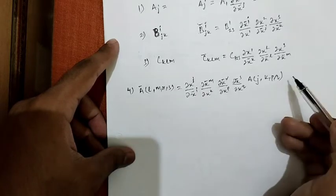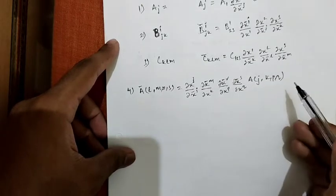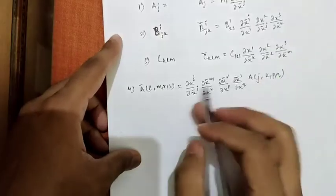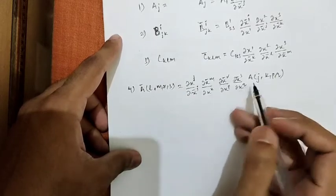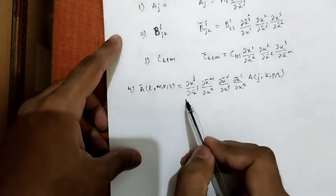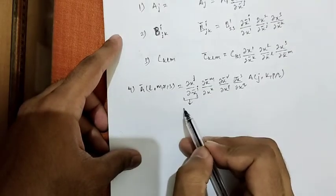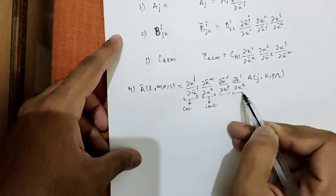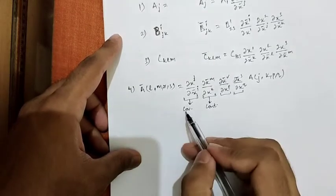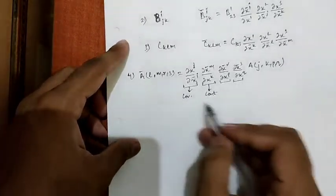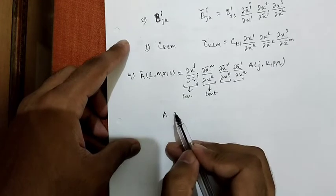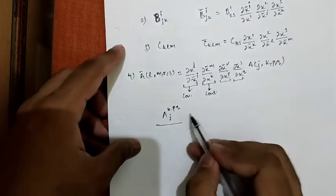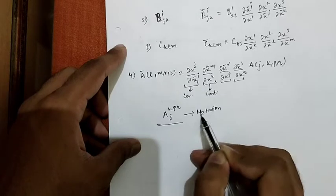The next question: consider a transformation from A_lmrs to some quantity with indices jkpq. Is this a tensor? Pause the video and think about it. Yes, this is clearly a tensor — it has covariant components (l, m) and contravariant components (r, s), making it a mixed tensor. The notation can be written as A^rs_lm or similar mixed tensor notation.